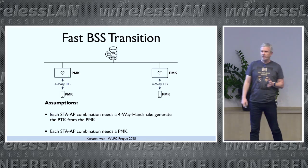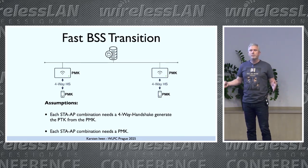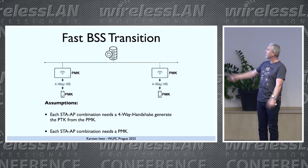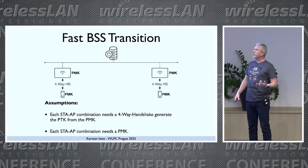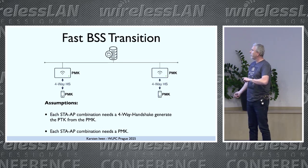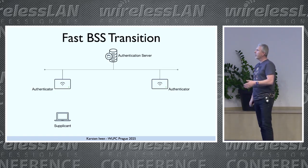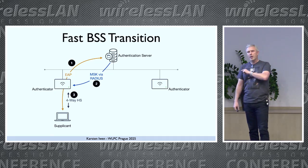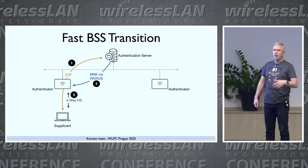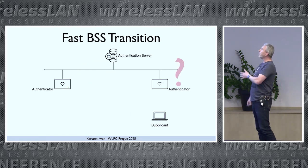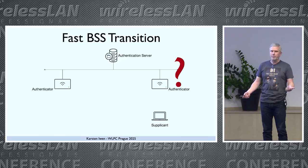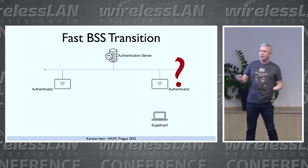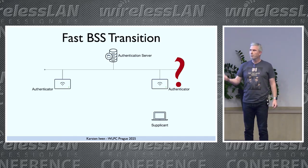Fast BSS transition will help us. First assumption: of course we want to have our encrypted connection — we want to build our PTKs. We do this typically with a four-way handshake. For the four-way handshake, we need a PMK on every AP. But when our client connects to the first AP and does the EAP exchange, the MSK gets delivered to the first AP and we do our four-way handshake. But when we roam, how do we get our PMK? Solving this problem is the main magic of fast BSS transition, but not the only.